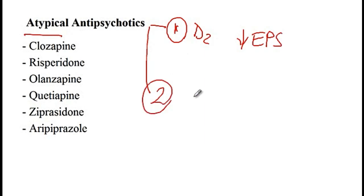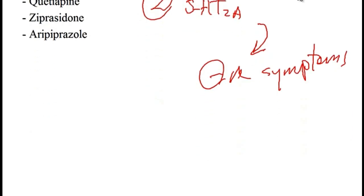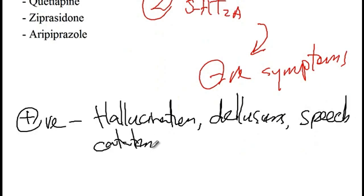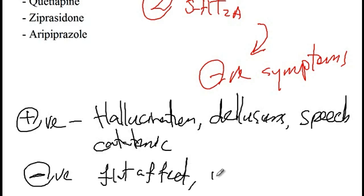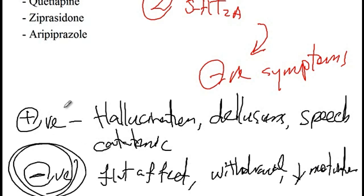In addition, atypical antipsychotics antagonize 5-HT2A serotonin receptors, which is beneficial for inhibiting the negative symptoms of schizophrenia. Positive symptoms of schizophrenia include hallucinations, delusions, disorganized speech, and catatonic behaviors. Negative symptoms include flat affect, social withdrawal, and lack of motivation. Atypical antipsychotics treat negative symptoms, while typical antipsychotics act mainly against positive symptoms.